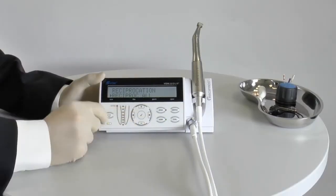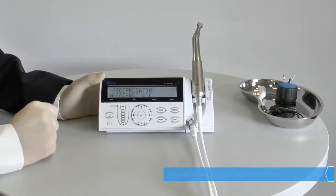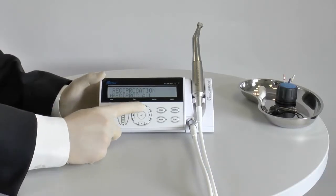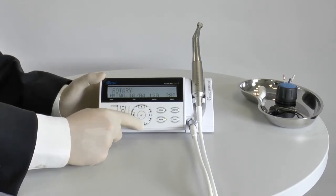You can pre-select a file system with the help of the navigation pad. The VDW Gold Reciproc incorporates the reciprocating file system Reciproc from VDW as well as all major rotary nickel-titanium file systems.